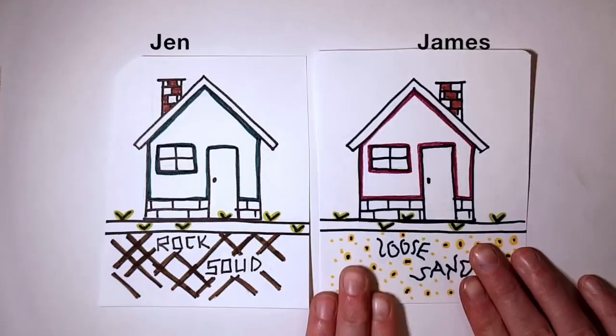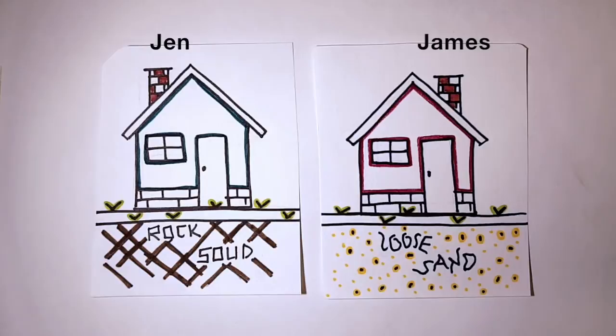Let's take these two examples. Jen here lives on bedrock, and James lives in a large basin where loose dirt and sediment have collected over millions of years.